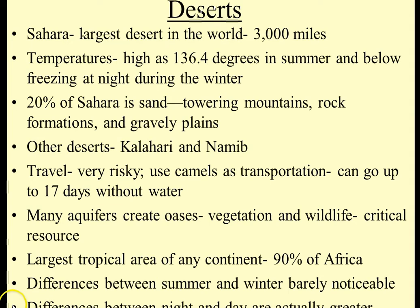Deserts of Africa — the biggest, the baddest, is the Sahara. Largest desert in the world, stretches 3,000 miles across. Temperatures vary from extremely hot in the summer to below freezing at night during the winter. 20% of the Sahara is sand; towering mountains, rock formations, and gravelly plains make up the other portions.